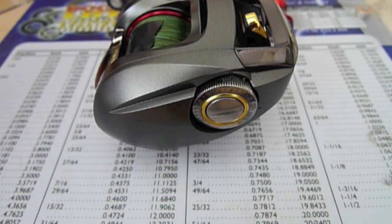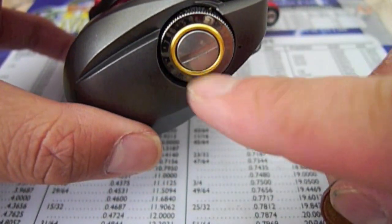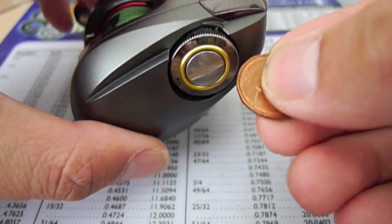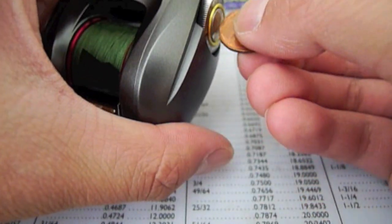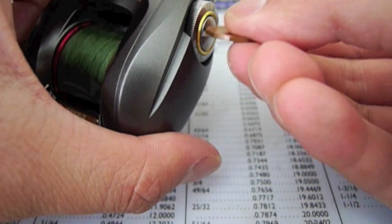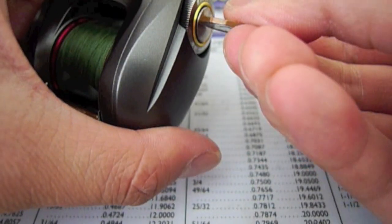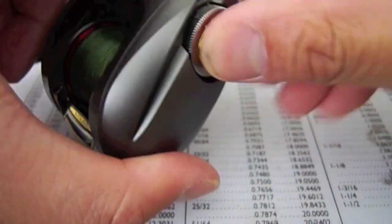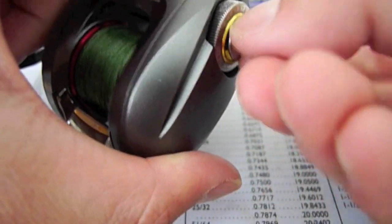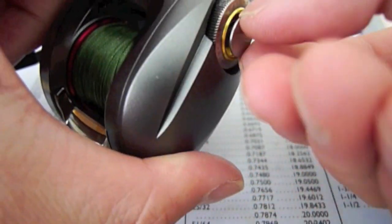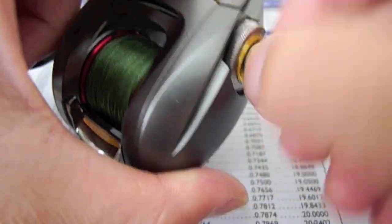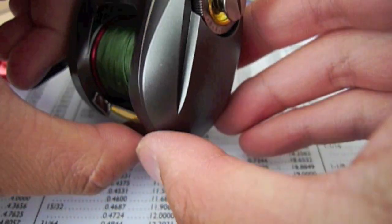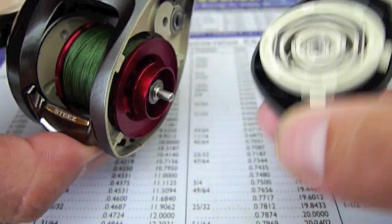The first thing that we're going to do is remove the side plate from the reel. You see this big screw here? We're going to take the coin and then screw it. After that, just spin the side plate and remove it.